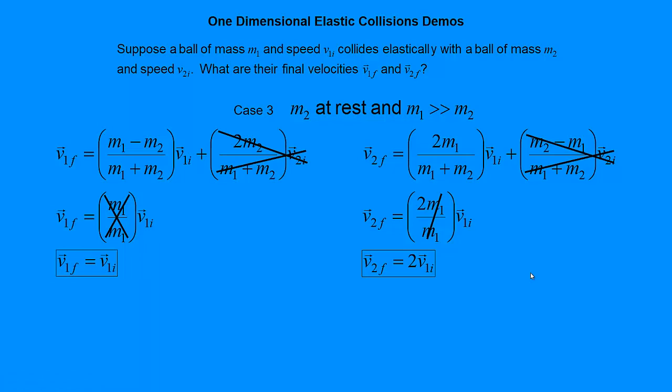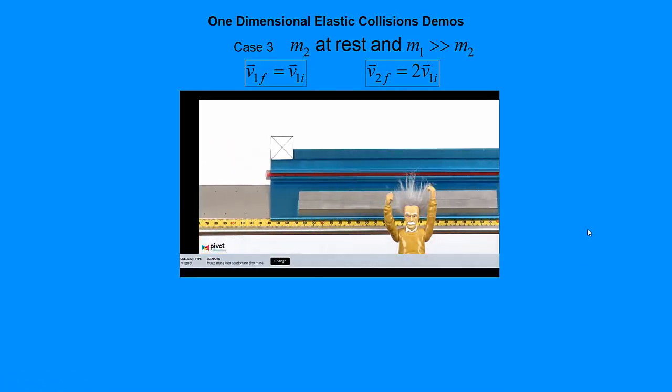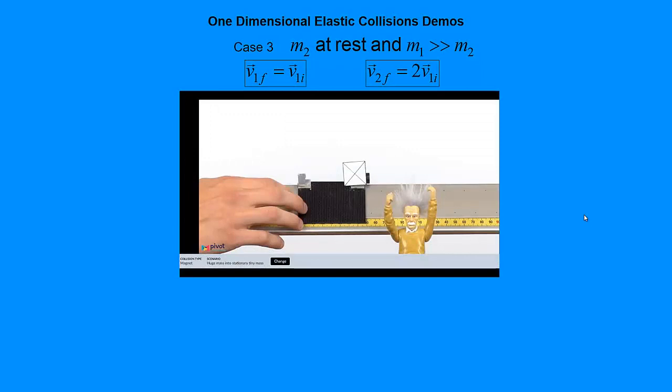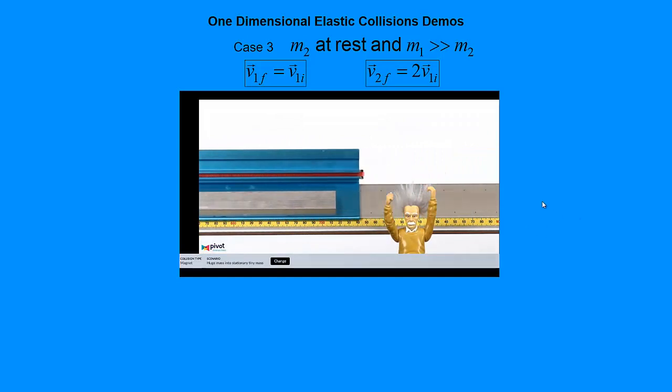Let's see if this works. So, here we have the situation of huge mass into stationary tiny mass. Again, is it exactly what we're talking about? No. Neither is it exactly elastic, but it's pretty close. So, watch what happens here. Now, watch it again. Do you notice that the massive one coming in from the right basically just keeps going? And that the tiny one goes off way faster? Watch. It's definitely faster.